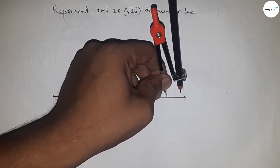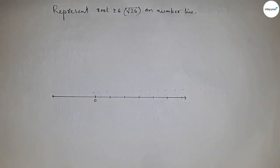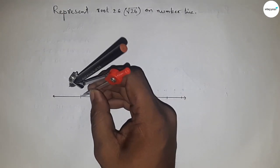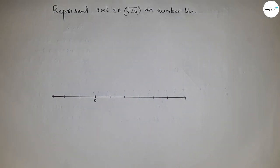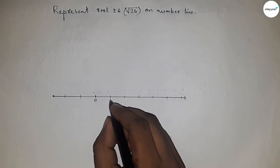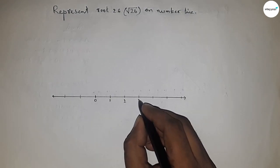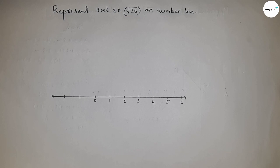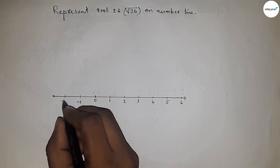This length is called standard unit length or one unit length. You can take any measure to mark the numbers on the line. So now this is one, two, three, four, five, six and so on, and this side is minus one, minus two, and so on.